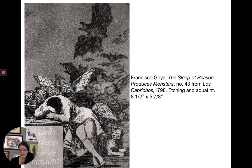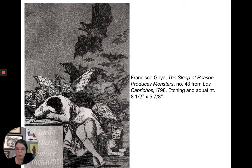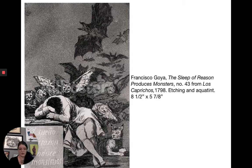Owls, which in Spanish culture can represent folly, and bats, symbols of ignorance, are all attacking him. Since we're on the cusp of the Enlightenment moving into Romanticism, this idea of reason going to sleep and monsters arising makes sense. It seems pro-Enlightenment, but it's hard to tell — it could also be an endorsement of the Romantic spirit, the idea of unleashing the imagination even though dark things come with it.